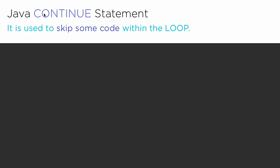So first of all, why do we use the continue statements in Java? The continue statement in Java is actually used to skip some code within the loop at a specified time and condition. So how do we use it? Here on the left hand side we have a loop example without the usage of the continue statement.